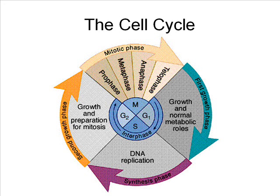The cell cycle is the life cycle of a cell. The stages of the cell cycle are interphase and M-phase. During interphase, the cell does its normal metabolic activities. Interphase is not a part of cell division; this is what happens before and after cell division has been completed.